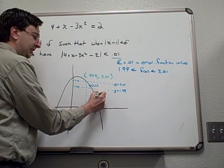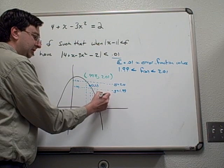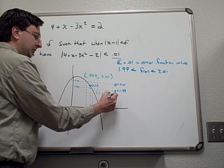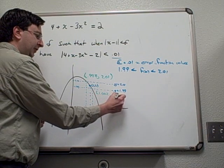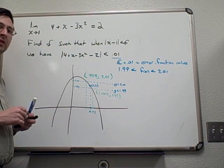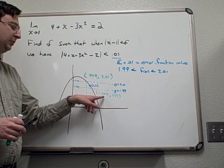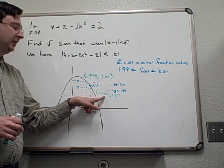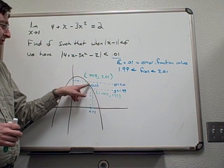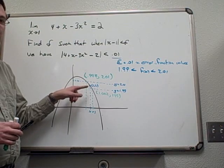This intersection occurs at 1.002 and that gives me an output for the function of 1.99. So as long as I let my x values go from 0.998 to 1.002, I'm guaranteed the outputs of the function will be within that 0.01 values we wanted.